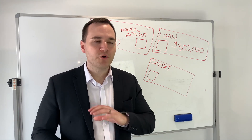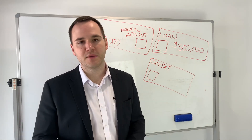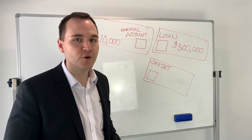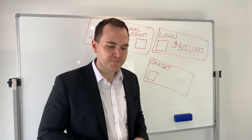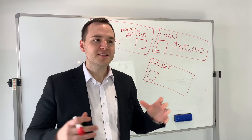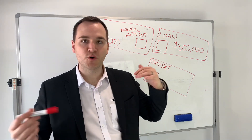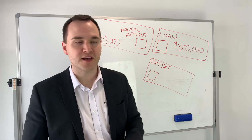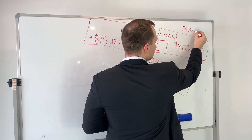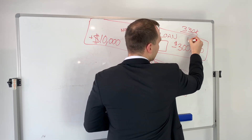I want to break it down for anyone that maybe hasn't bought yet, maybe you're young, or you just want to find out a little bit more. I've drawn this behind me. So let's say I bought one property as an example, and the property is worth $330,000 — so I bought it for $330,000. I did a 10% deposit on it, and that's my loan right there.